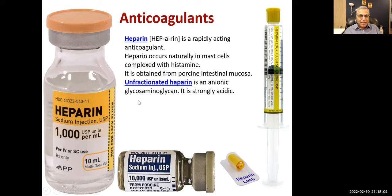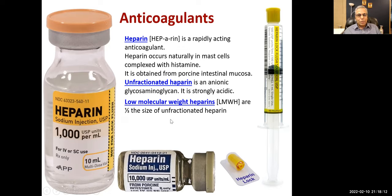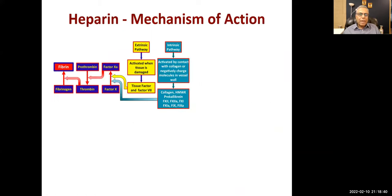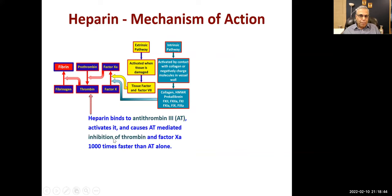Unfractionated heparin is an anionic glycosaminoglycan — strongly acidic. Low molecular weight heparins are one-third the size of unfractionated heparin. Heparin has pharmacokinetic properties that make plasma levels difficult to predict. The low molecular weight heparins are enoxaparin, deltaparin, and tinzaparin.